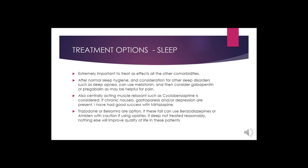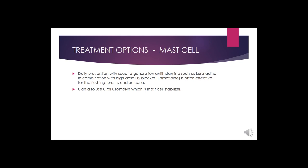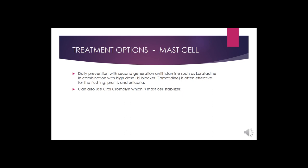Sleep treatment is extremely important as poor sleep affects all comorbidities. After normal sleep hygiene and consideration of sleep apnea, options include melatonin, gabapentin, pregabalin, cyclobenzaprine, and mirtazapine (especially useful when gastroparesis or depression are present). Trazodone or belsomra are additional options. Benzodiazepines or Ambien should be used with caution if opiates are also prescribed. If sleep is not adequately treated, nothing else will significantly improve quality of life. For mast cell activation syndrome, daily prevention with second-generation antihistamines like loratadine combined with an H2 blocker like famotidine is often helpful; if insufficient, oral cromolyn (Gastrocrom, a mast cell stabilizer) can be added.